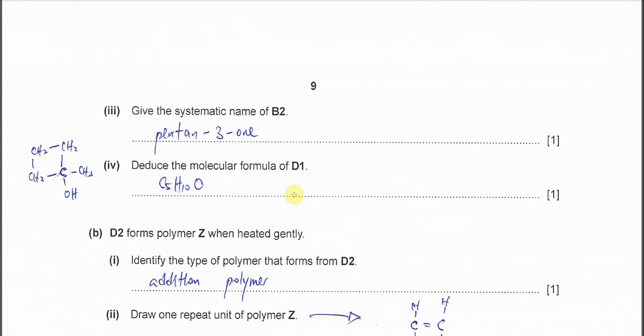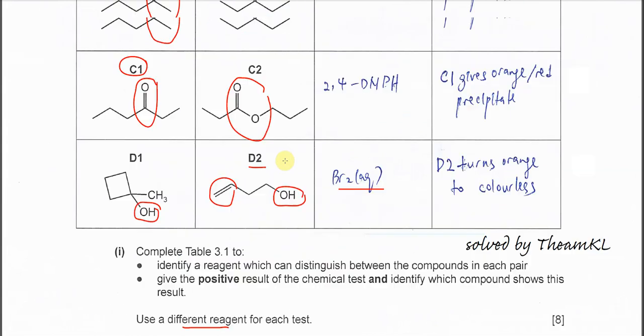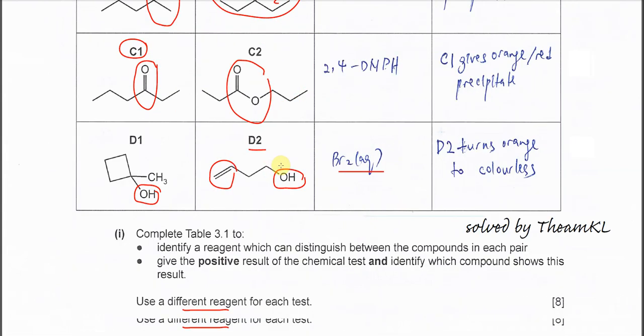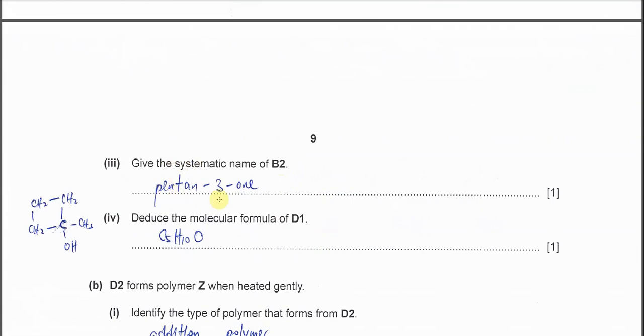Give the systematic name of B2. This is first carbon, second carbon, third carbon, right? So therefore, we know that this one we can call pentan-3-one.